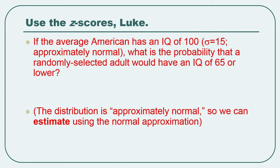So here's another example. See if you can figure it out by yourself before unpausing the video. If the average American has an IQ of 100, standard deviation of 15 with an approximately normal distribution. Now that's the key. If I say approximately normal in a problem in this class, just go ahead and say it's normal. I'm using this whole process with the normal table.